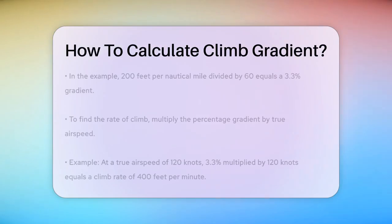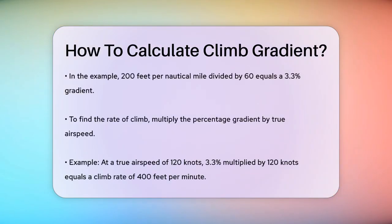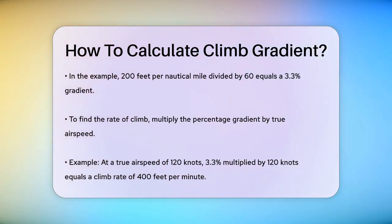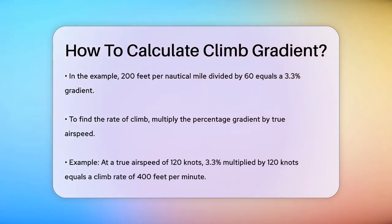Now, to find the rate of climb, you multiply this percentage gradient by your true airspeed. If your true airspeed is 120 knots, then multiplying 3.3% by 120 knots gives you a rate of climb of 400 feet per minute.